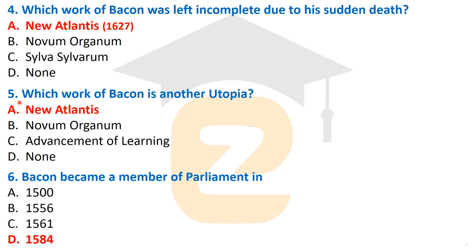Which work of Bacon is considered another utopia? That is New Atlantis, his incomplete work. This is described as another utopia by Francis Bacon, and it was influenced by Thomas More's Utopia.